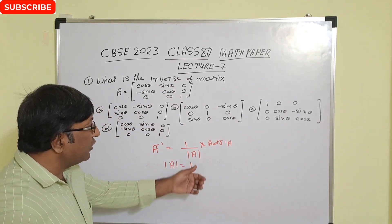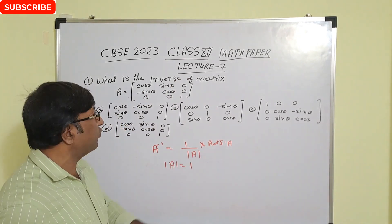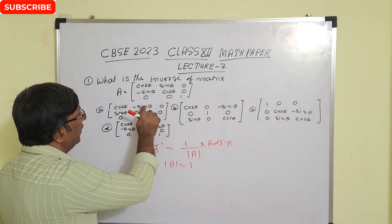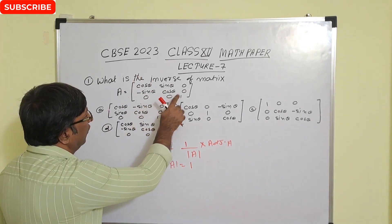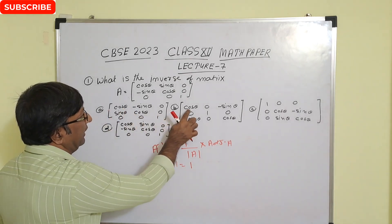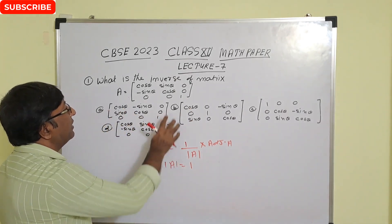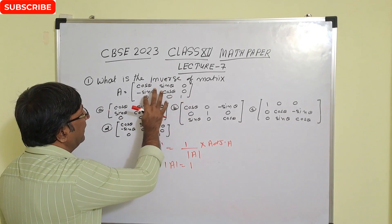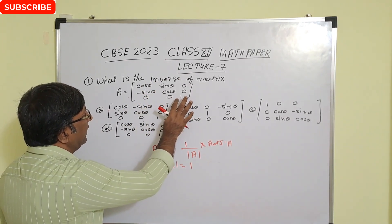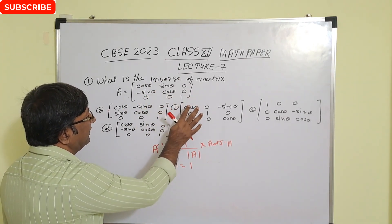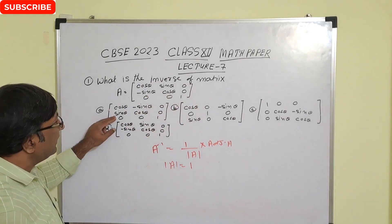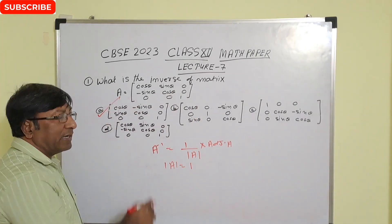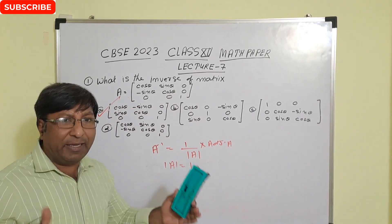Now adjoint of A is the transpose of the cofactor matrix. For first row, first column the cofactor is cos θ. For first row, second column, you get minus sin θ, so after sign adjustment it becomes plus sin θ; and here minus sin θ. So our correct answer is option A.